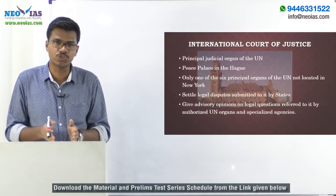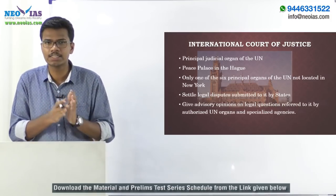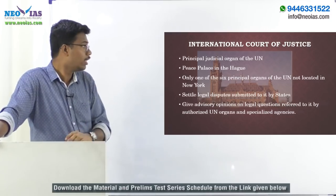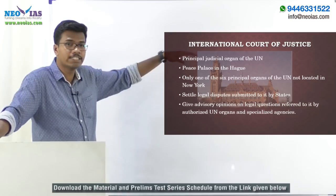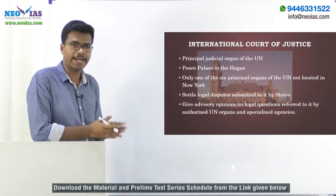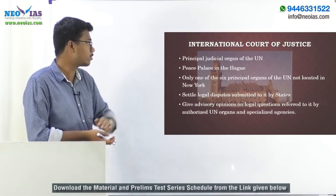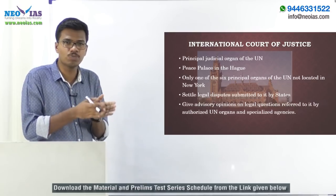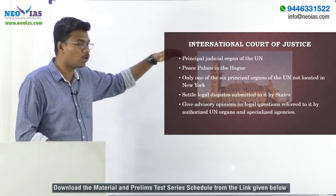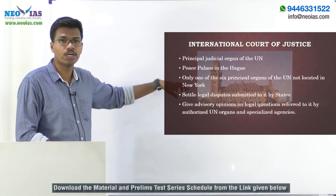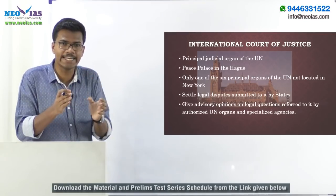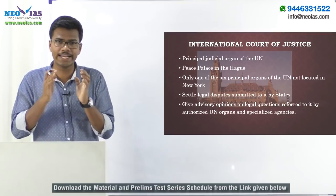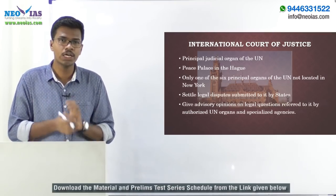The fifth main organ is the International Court of Justice, or ICJ — particularly important from an exam perspective. The ICJ is the principal judicial organ of the United Nations. Its headquarters is located at the Peace Palace in The Hague. Notably, the ICJ is the only one of the six principal organs of the United Nations not located in New York, United States of America — all five other main organs are situated in New York.